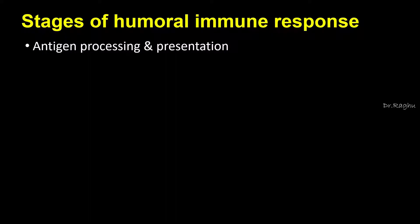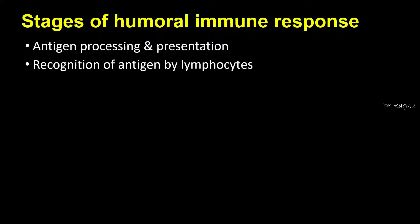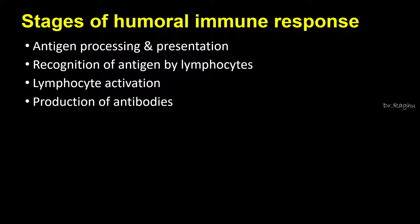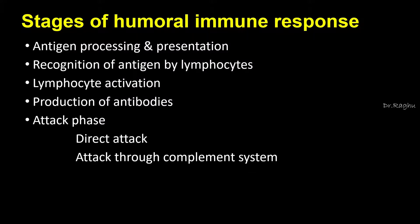Let's understand the stages of the humoral immune response. The first stage is antigen processing and presentation. The second stage is recognition of this processed and presented antigen by the B lymphocytes. Once the B lymphocyte recognizes the antigen, it becomes active and gets converted into plasma cells, which produce antibodies that attack foreign antigens either by direct attack or via activation of the complement system.